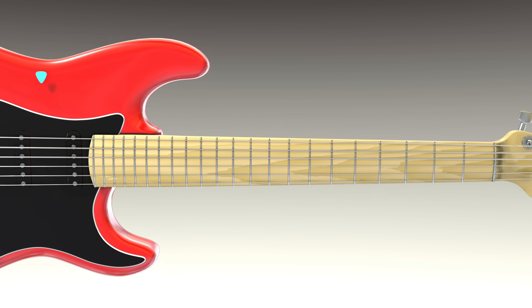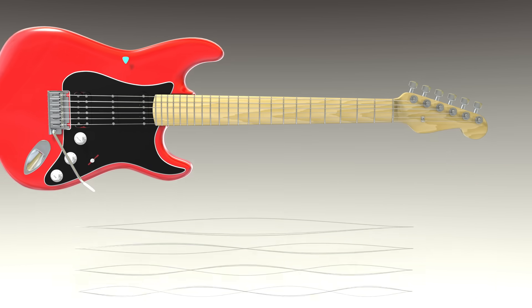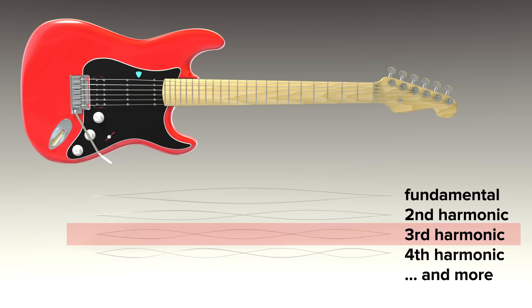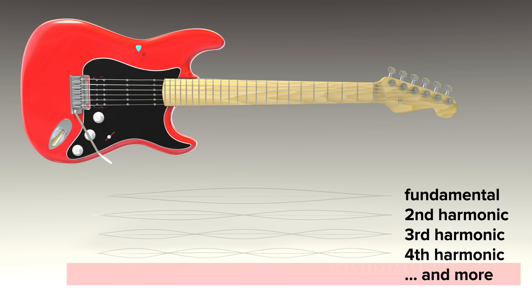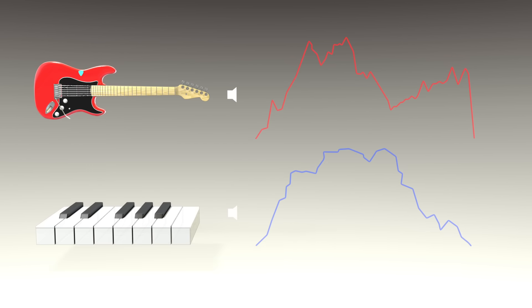Here's the exact same guitar string pluck sound, but I've isolated distinct frequencies from low to high. A single instrument note is really a sandwich of frequencies where one main frequency stands out. This frequency sandwich is known as an instrument's timbre, or unique sound.